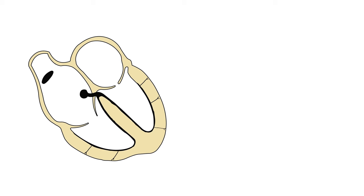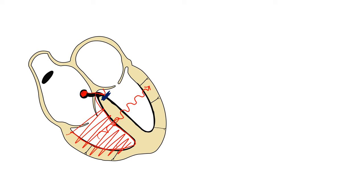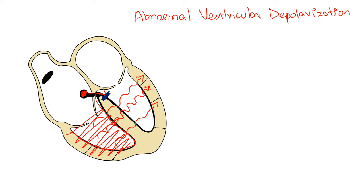To understand Sgarbossa Criteria, we need to understand three underlying concepts. The first concept is regarding what actually happens in LBBB. In a normal heart, once the atria gets depolarized, the impulse in the AV node travels down the bundle of His and into the bundle branches on both sides simultaneously, resulting in a simultaneous depolarization of both sides of the ventricle. In a patient with LBBB, there is a block in the left bundle branch. As a result, the impulse can only travel down the right bundle branch into the right ventricle, then slowly across the myocardium into the left ventricle, resulting in a slow and abnormal depolarization of the left ventricle. In short, the primary abnormality in LBBB is an abnormal ventricular depolarization.